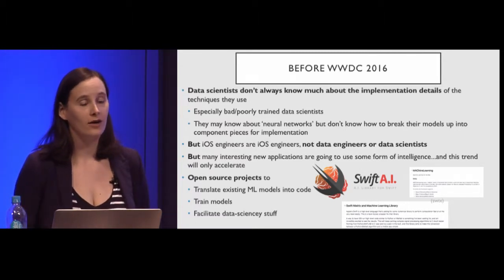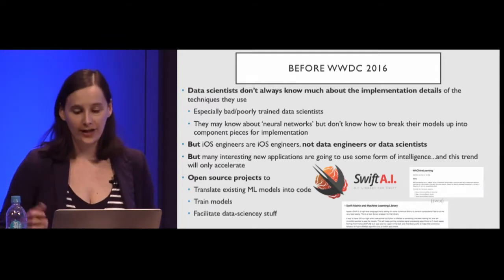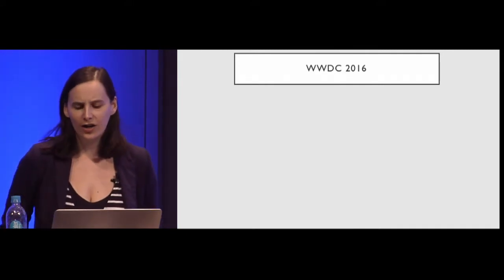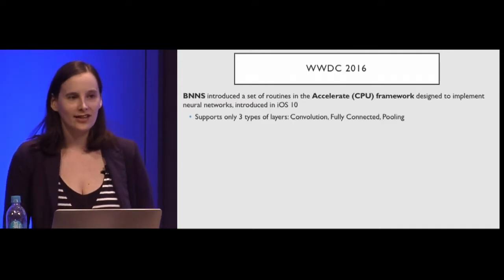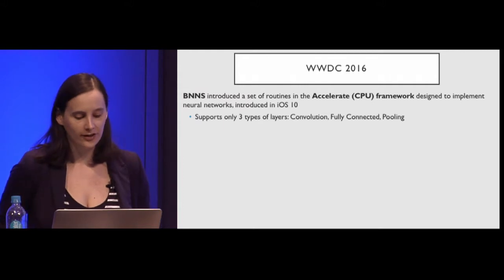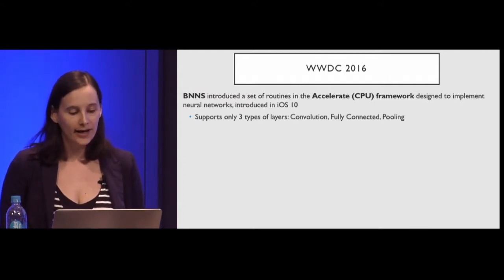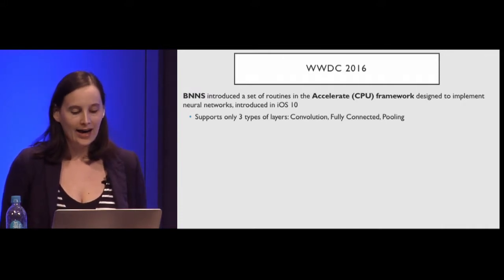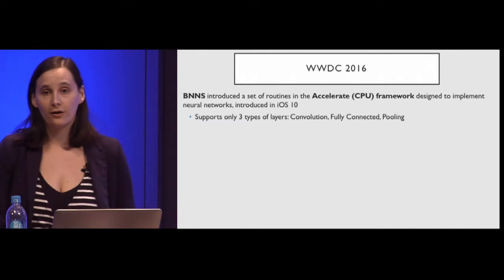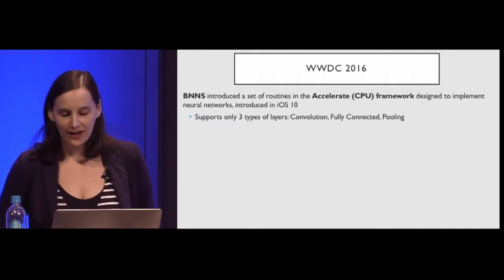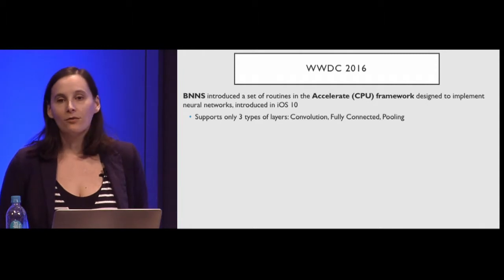In WWDC 2016, a couple of things came out that I don't think got as much attention as they ought to have, particularly given how popular neural networks were already becoming. There was BNNS — Basic Neural Networks — which introduced a set of routines for the Accelerate CPU framework designed to implement neural networks. It came out in iOS 10, though it was somewhat limited.